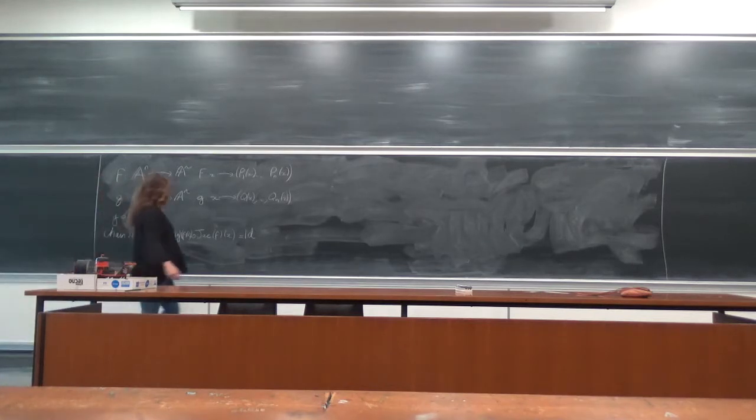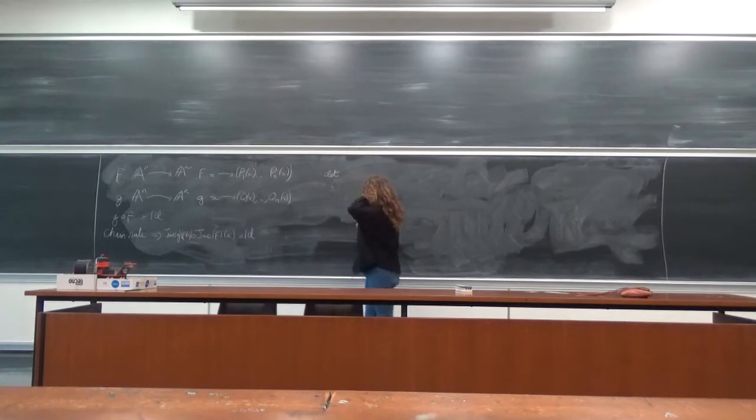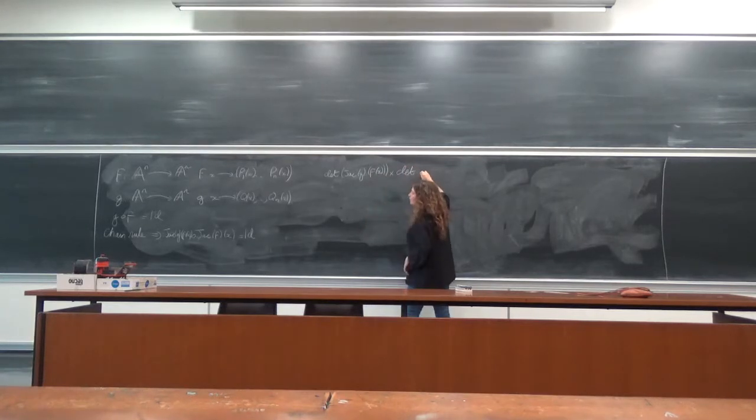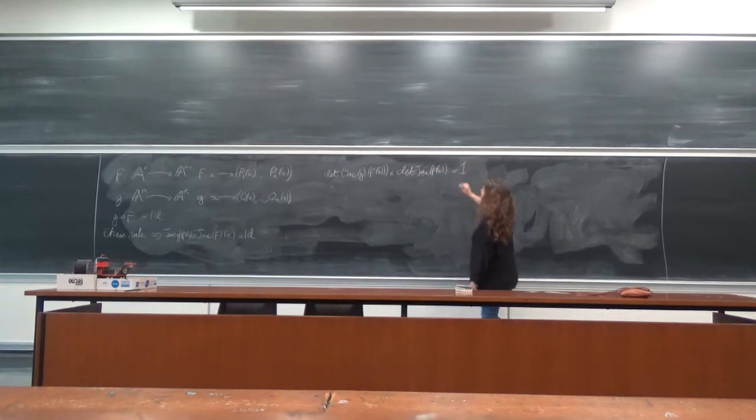So now let's calculate these. What I get is that the determinant of the Jacobian of g evaluated at f of x, which is multiplied by the determinant of the Jacobian of f of x, is 1.